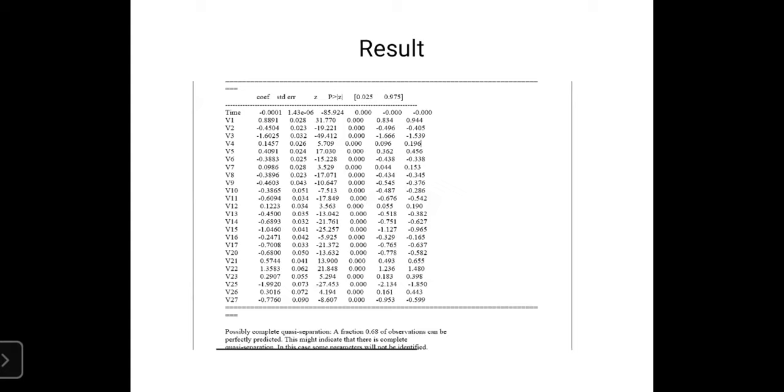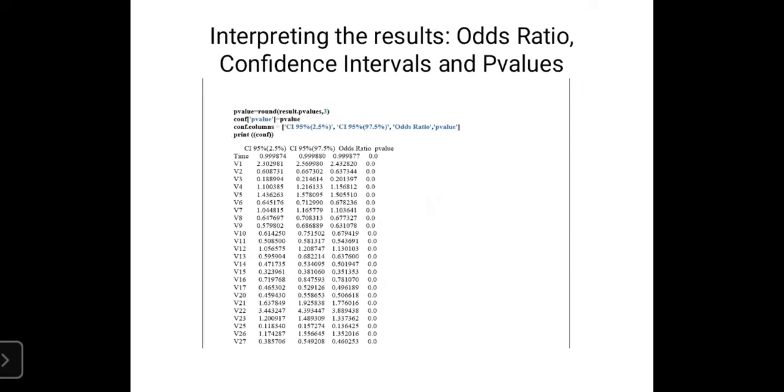It shows the results of the backward elimination. We can see that 68% of observations can be perfectly predicted. Now I'd like to hand over to Ankit for further explanation. Thank you.